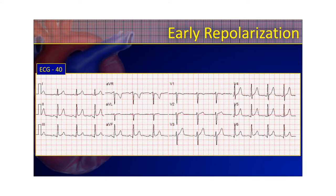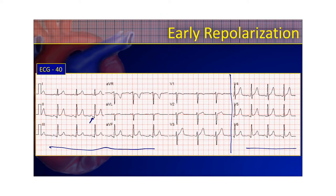Here's another good example of early repolarization. We have a sinus rhythm with a good normal axis and no aberrancy. We're looking for ST changes, and I do see a little bit of what you might think is ST elevation in these left precordial leads and maybe in these inferior leads as well. What makes it look more pronounced is the PR segment might actually be a little depressed here — you're seeing this trending down of the baseline and then going into that PR segment, which is also downwards. That's actually indicative of something called Spodick's sign, which is indicative of acute pericarditis.